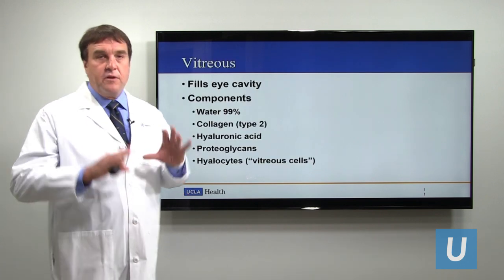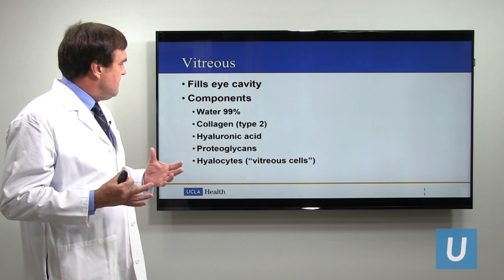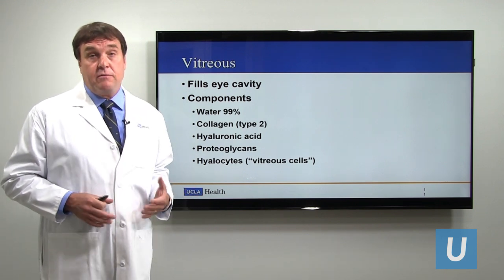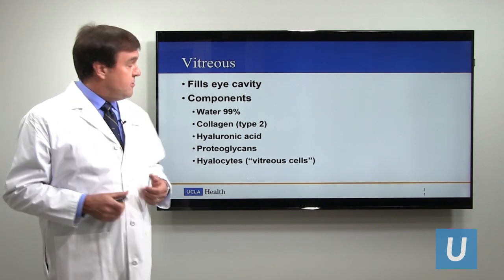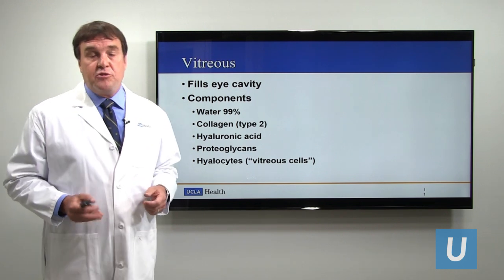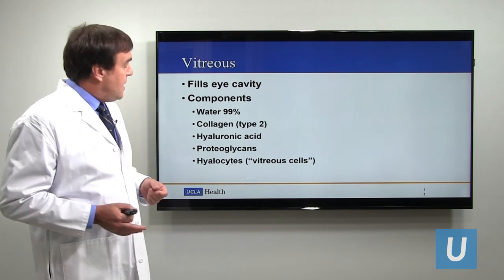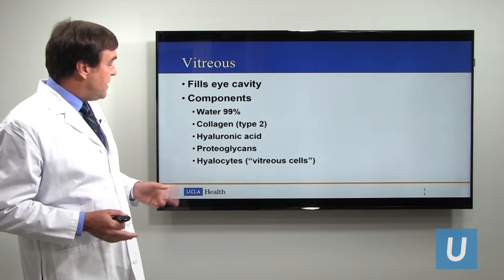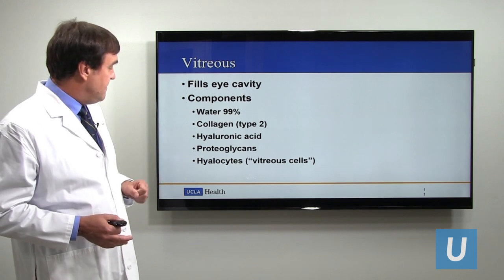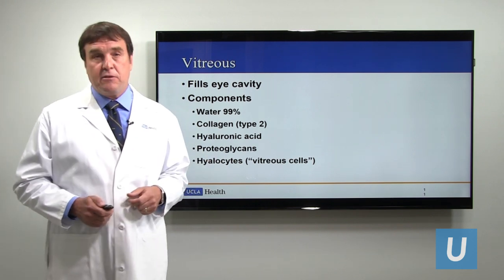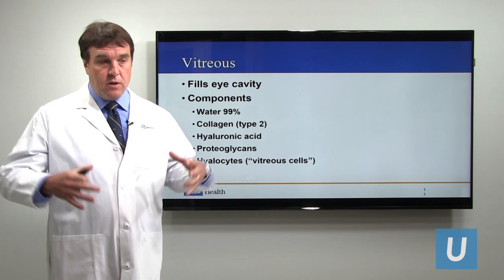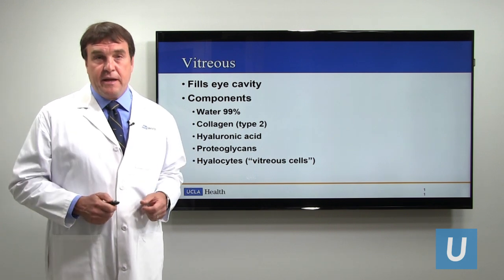Vitreous fills the cavity of the eye completely. It is made up mainly of water — 99% of the vitreous is water — but it's also made up of collagen or connective tissue fibers and molecules called hyaluronic acid and proteoglycans, as well as some cells called hyalocytes, which are vitreous cells that support that whole area and keep it healthy.